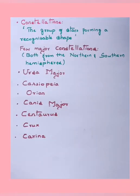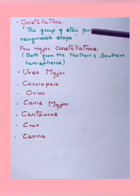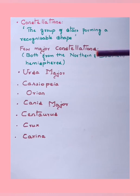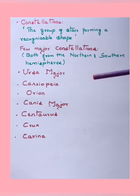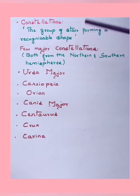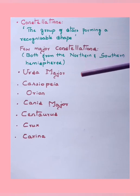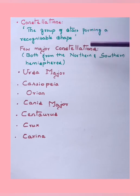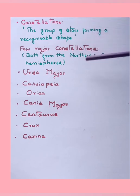Moving to the next concept: constellations. Constellations are groups of stars forming a recognizable shape. A massive group of stars is called a galaxy. There are millions and billions of galaxies in the universe. When we look at the sky from the earth, we recognize groups of stars which form certain imaginary shapes — those groups of stars forming recognizable shapes are called constellations.